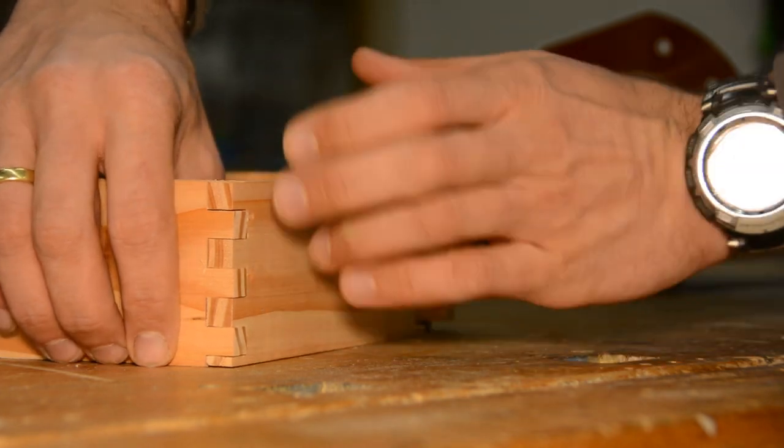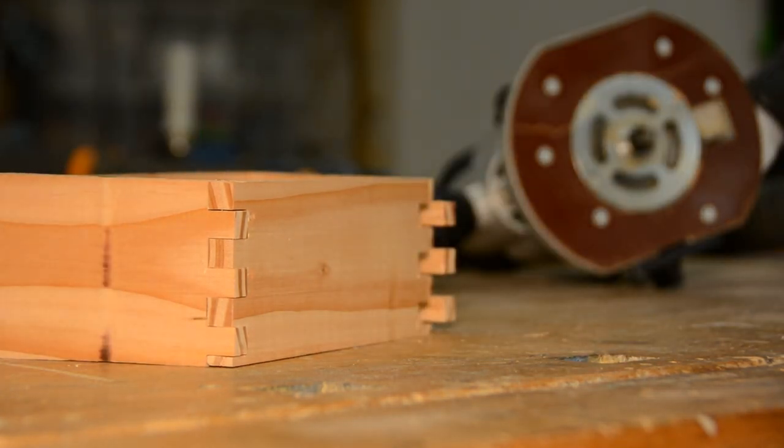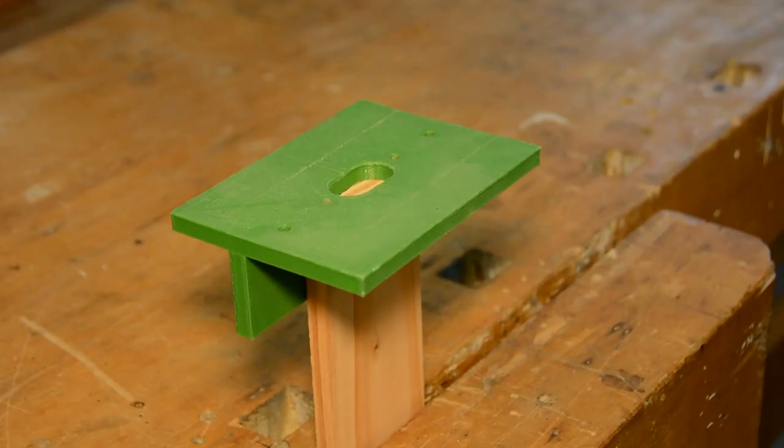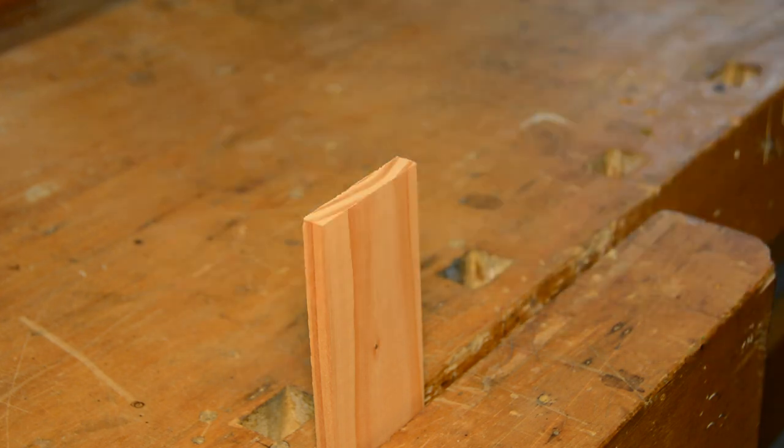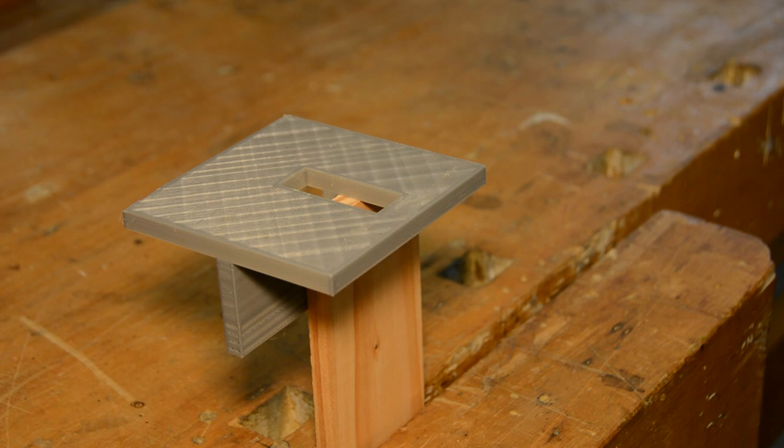Creating box joints or finger joints on the table saw requires either a dado set or a complex jig setup. We were looking for a quick and easy way to create these joints and decided to develop a 3D printed version. We took the model of our loose tenon jig and turned the slot 90 degrees.